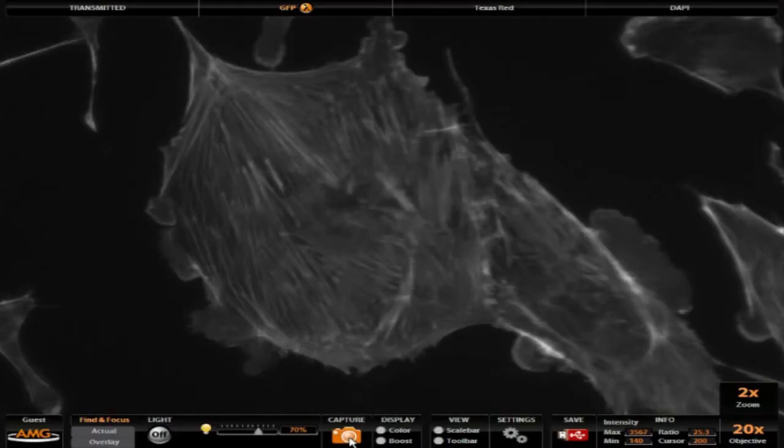You can now repeat this technique and continue to scan and focus using 20% while capturing at 70% illumination power. This is a simple, effective way to absolutely minimize the amount of photobleaching and phototoxicity in your sample while capturing excellent, high-quality images.